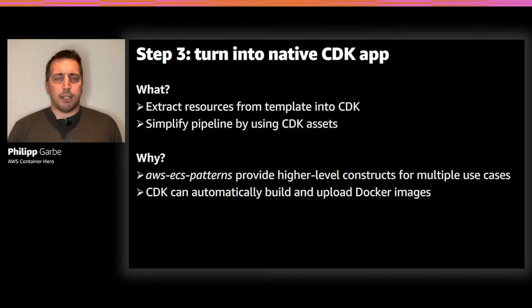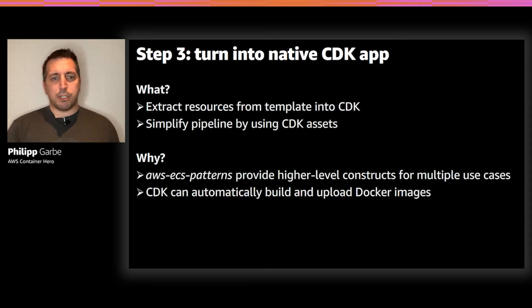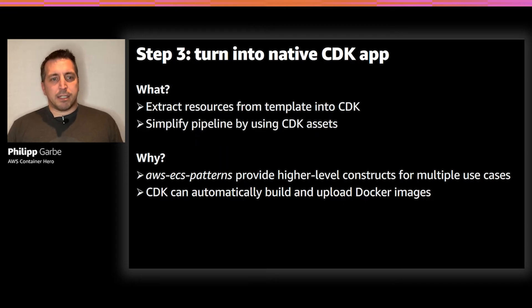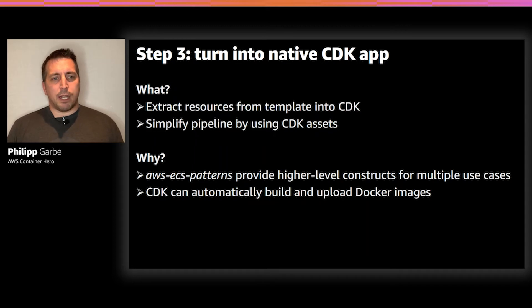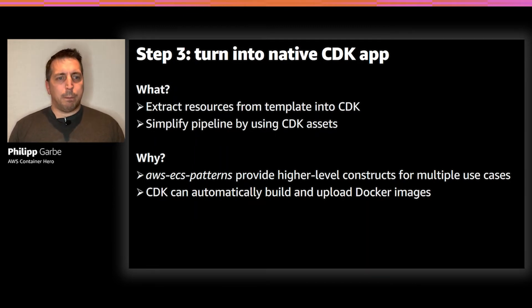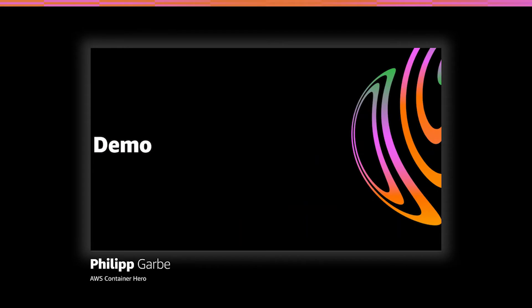The third step is to turn it into a native CDK application. What I did is extract some resources from the templates and pull them into the CDK application. You can do that all at once if it's a smaller template, or step-by-step depending on the dependencies. With that, I can already benefit from higher-level constructs which are part of the CDK library, like for example the AWS ECS patterns. It also simplifies our pipeline because I now use CDK assets, meaning CDK automatically builds my Docker image and uploads it to an ECR repository.